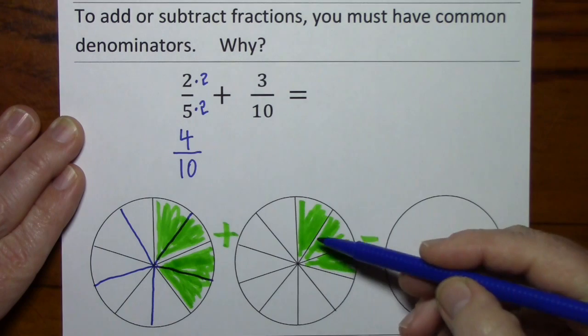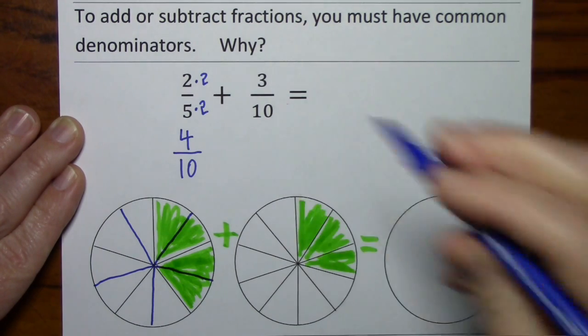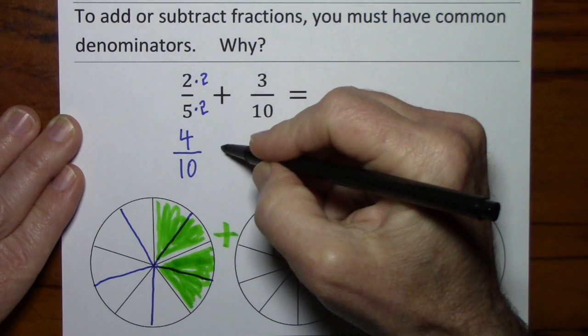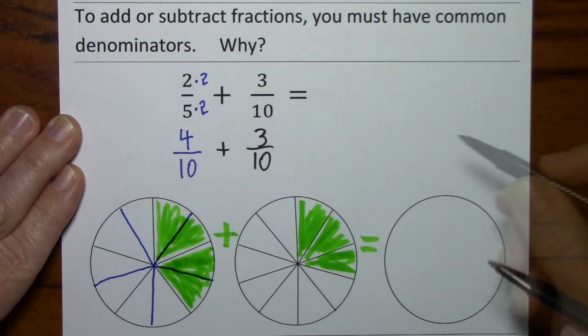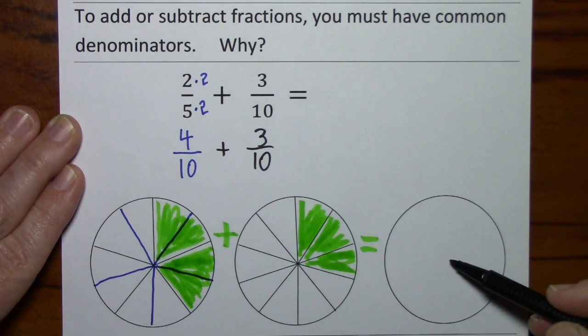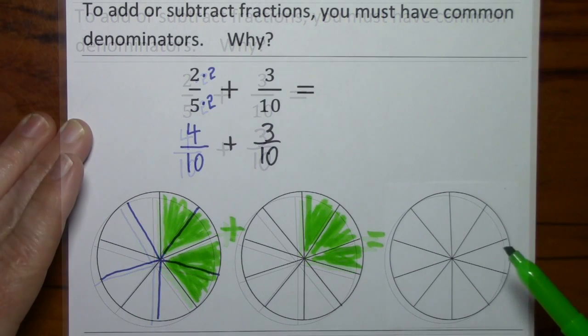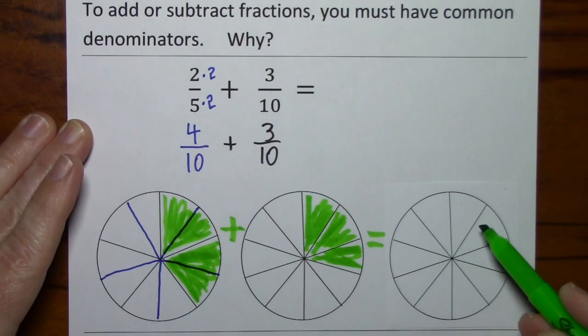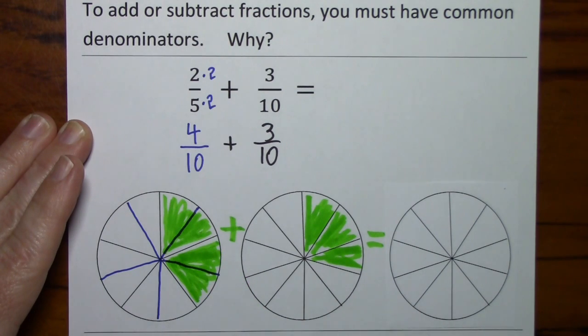3 tenths was already divided into tenths, so I'll just write that. That means my answer is going to be in tenths. So I'll just need to shade in 3, 4, 5, 6, 7 tenths.